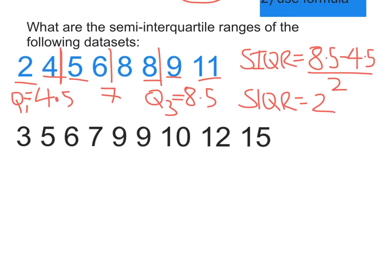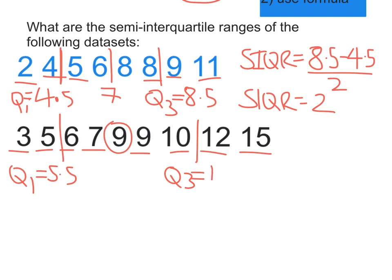Let's work out our second semi-interquartile range. First work out the medians. We have a single median, so we exclude that when working out our quartiles. So Q1 is 5.5 and Q3 is 11.